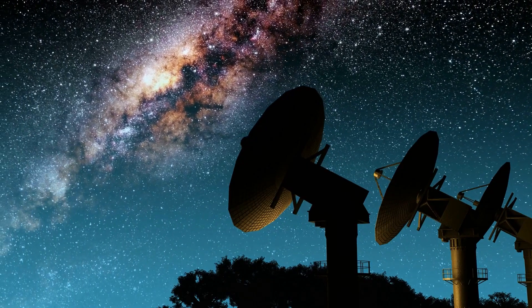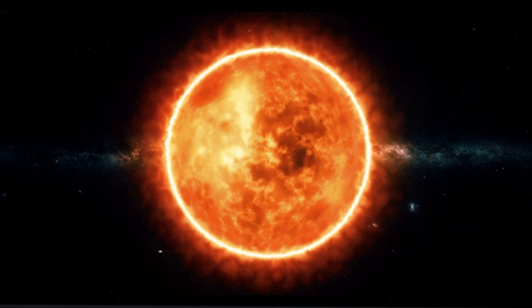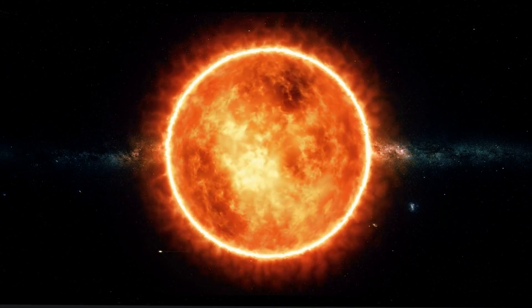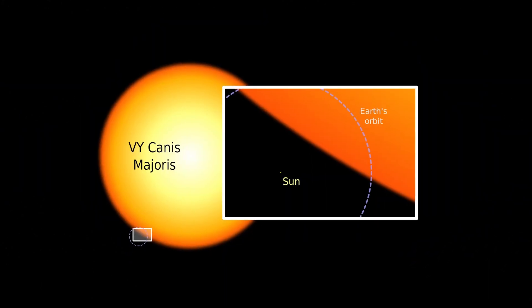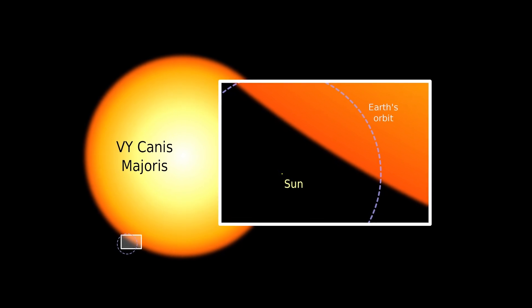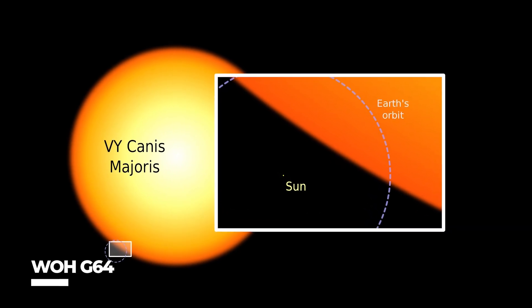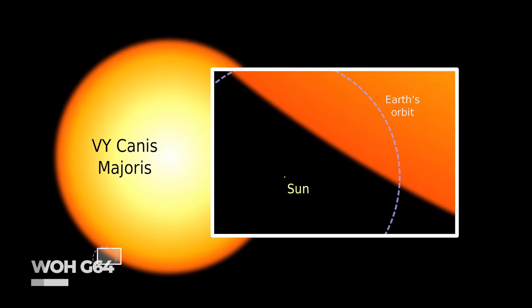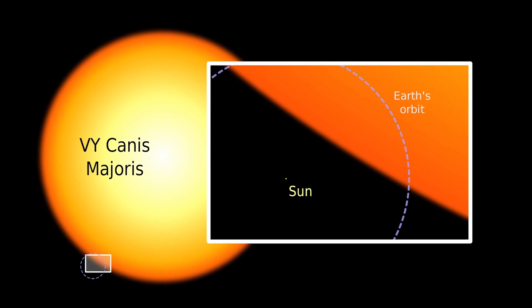If the size of UY Scuti were revised, which star would replace it? Here are a few that could unseat the monster, which is currently 1,700 times as wide as the sun. It was originally believed that WOH G64 was a stunning 3,000 times the width of the sun in size.